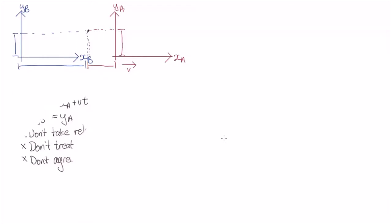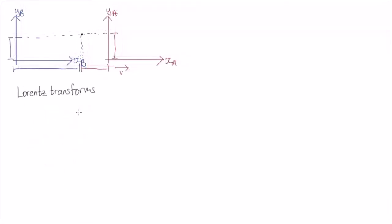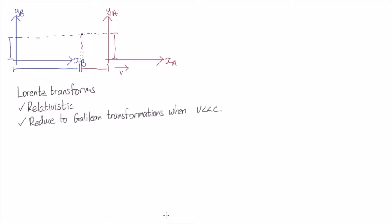What we're going to do now is derive the Lorentz transformations. These are transformations between inertial reference frames, but these are relativistic. They take into account all of the effects we've discussed, but they also reduce to the Galilean transformations when velocity is much less than the speed of light. As they should, because in our everyday life we don't see these relativistic effects, and everything works according to Galilean relativity.